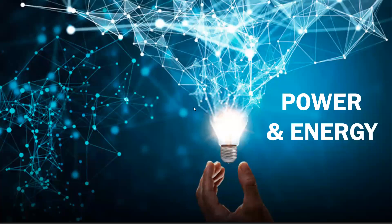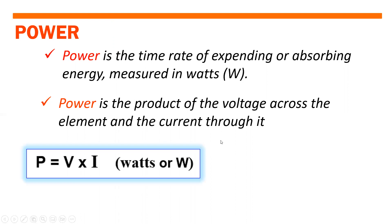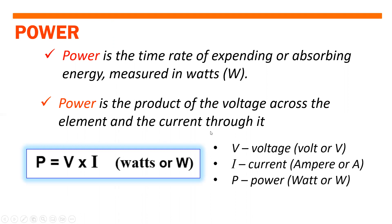Now we are going to discuss power and energy. Power is the time rate of expending or absorbing energy, measured in watts. It is the product of the voltage across the element and the current through it. Mathematically, power can be expressed as P equals V multiplied by I, where V is the voltage in volts, I is the current in amperes, and P is the power expressed in watts.